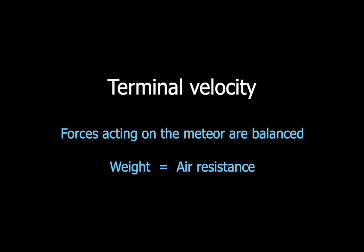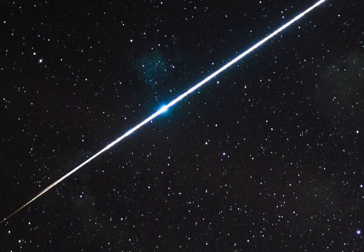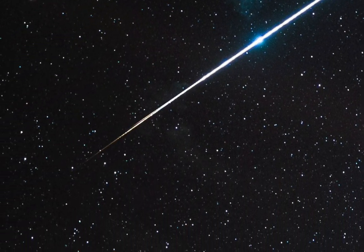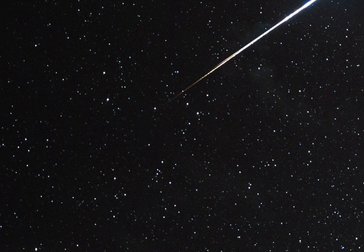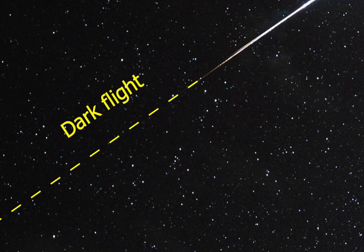About 10 kilometers above the ground, it reaches its terminal velocity of 100 meters per second. It will remain at this speed for the rest of its flight. Ram pressure eases off, so it cools down. Its surface refreezes, and it stops glowing. This phase is known as dark flight. Once again, the meteor is invisible to us.